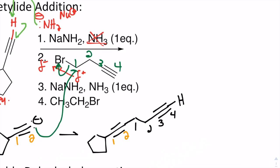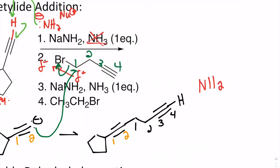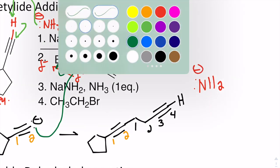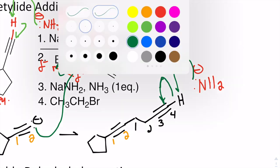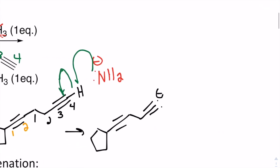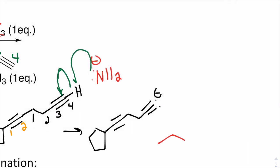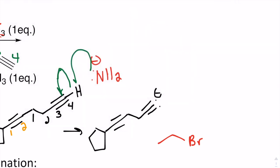That second equivalent of sodium amide deprotonates the terminal alkyne proton again — mechanistically, the lone pairs grab that acidic proton and generate the acetylide anion. Then in step two, we react with CH3CH2Br. There is a localized dipole toward that bromine, so we can rationalize those mechanistic arrows, and we're adding two carbons to the chain.